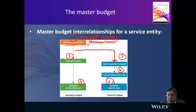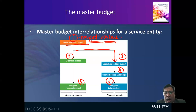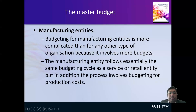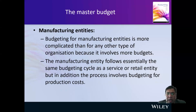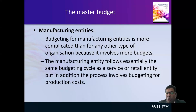With your targeted revenue, you decide how much you're going to spend on labor. For service, it's basically labor, and if you need new equipment that will be capital expenditure. For manufacturing, it's more complicated — that's where we're going to focus a lot. Manufacturing entities follow essentially the same budgeting cycle as service entities, but there are many more processes involved for production costs.